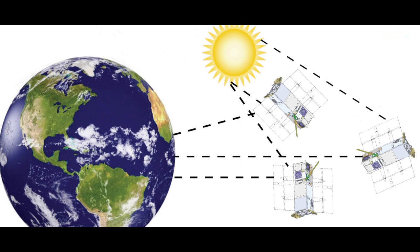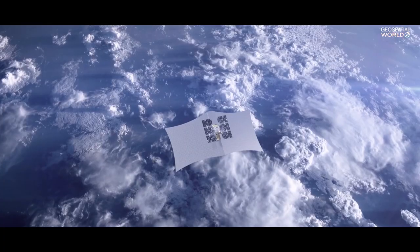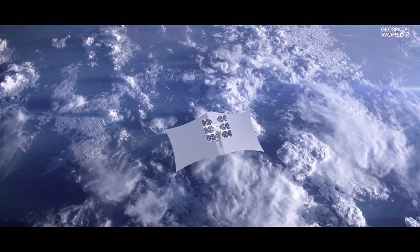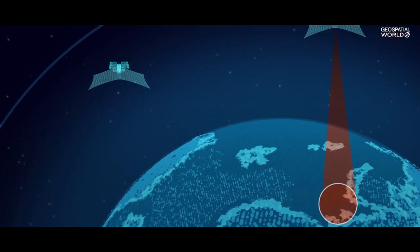Optical satellites capture energy much like a camera or your human eye, so typical optical satellites see the same things that we see when we look out at the world. When we look up and see clouds, that's exactly what a traditional optical satellite sees when imaging the earth.